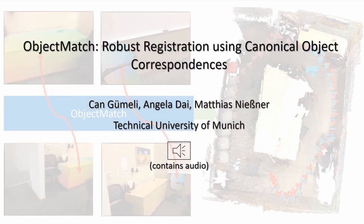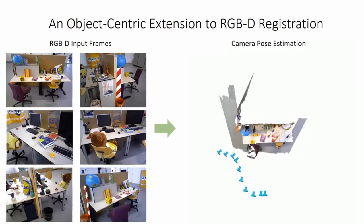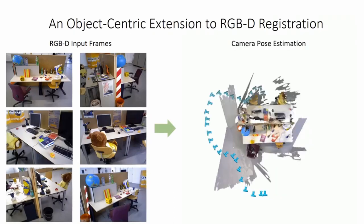We present ObjectMatch, robust registration using canonical object correspondences. ObjectMatch is a new semantic, object-centric approach to camera pose estimation for RGBD registration.